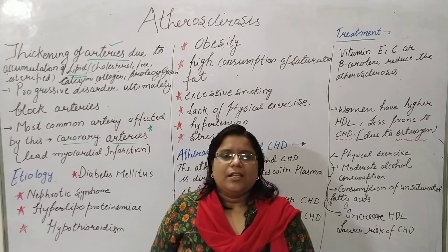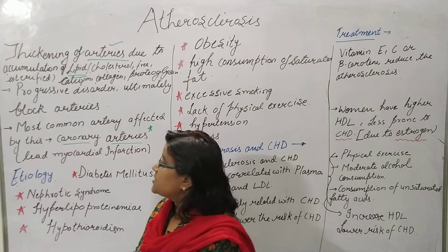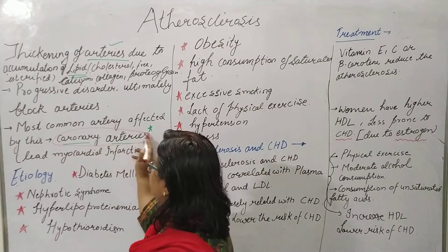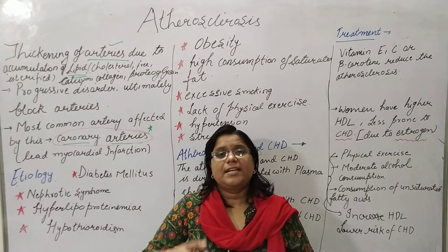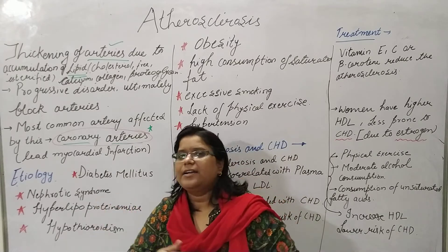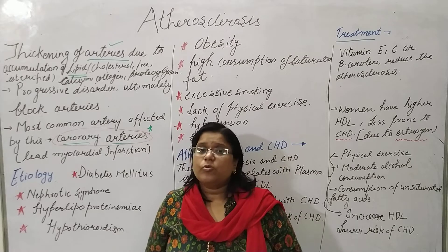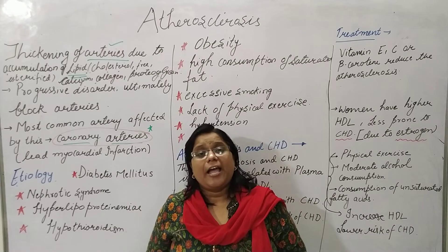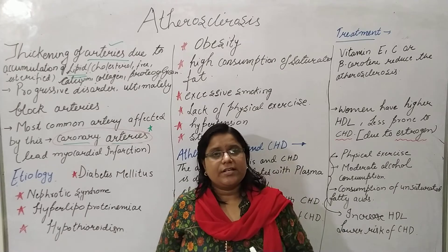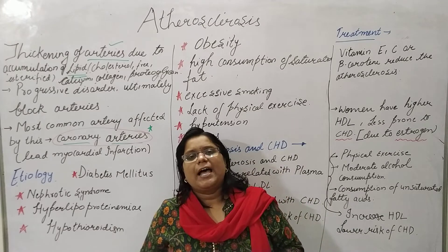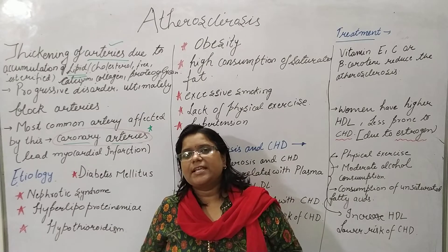The most common artery affected by this disease is the coronary artery. The coronary artery is the vessel that supplies blood to the heart itself. Heart cells and heart muscles need blood continuously because they require oxygen and must work 24/7. That oxygen is fulfilled with the help of the coronary arteries.